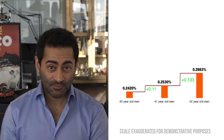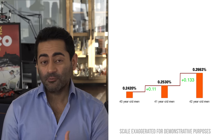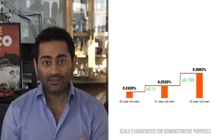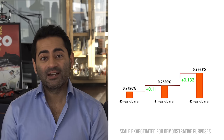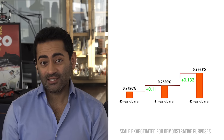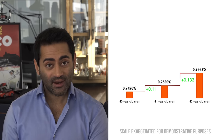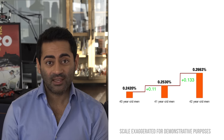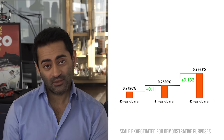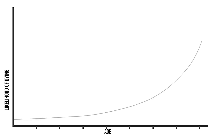So, conceptually, if we were to plot the likelihood of dying in the next year on the y-axis and age on the x-axis, we would get a curve that looks something like this.